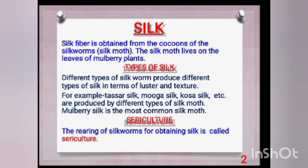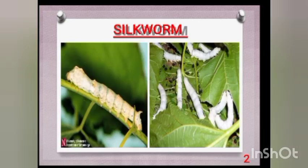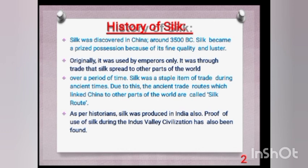The other animal fiber is silk. Silk is obtained from the cocoons of silkworms, and sericulture — the rearing of silkworms to obtain silk — is what this process is called. In the picture, a silkworm is shown; it is a caterpillar that feeds mainly on mulberry leaves. The history of silk begins in China, where silk was first produced; in ancient times, only emperors wore silk clothes. Routes from China transporting silk to other countries are called Silk Routes.